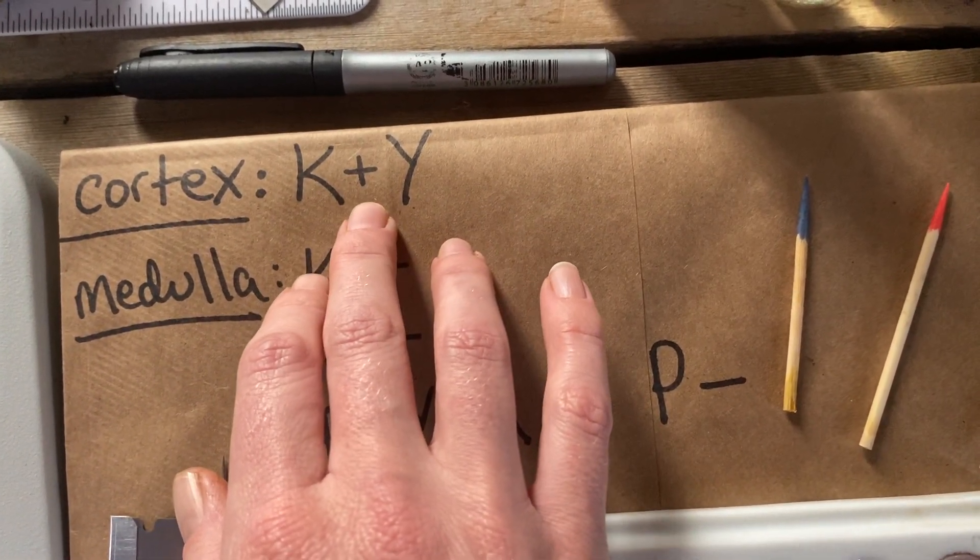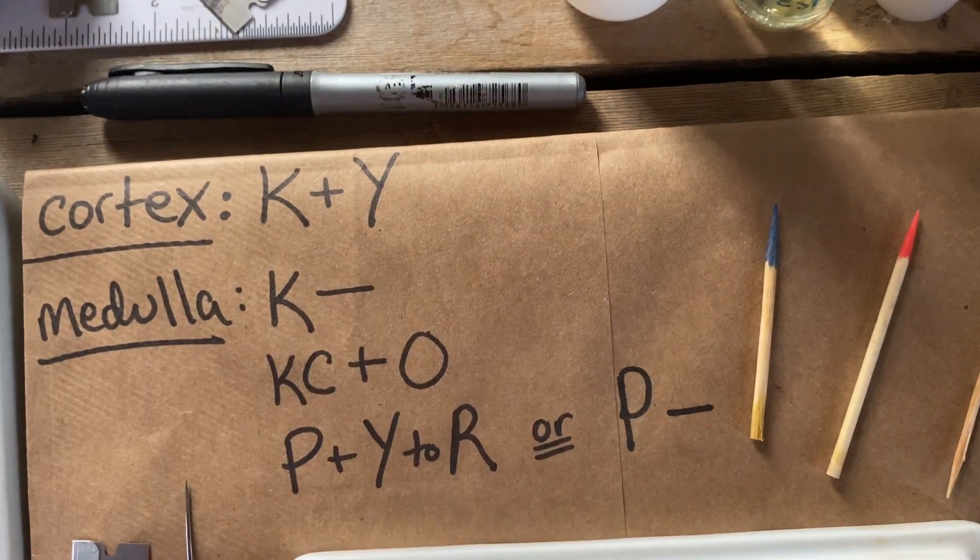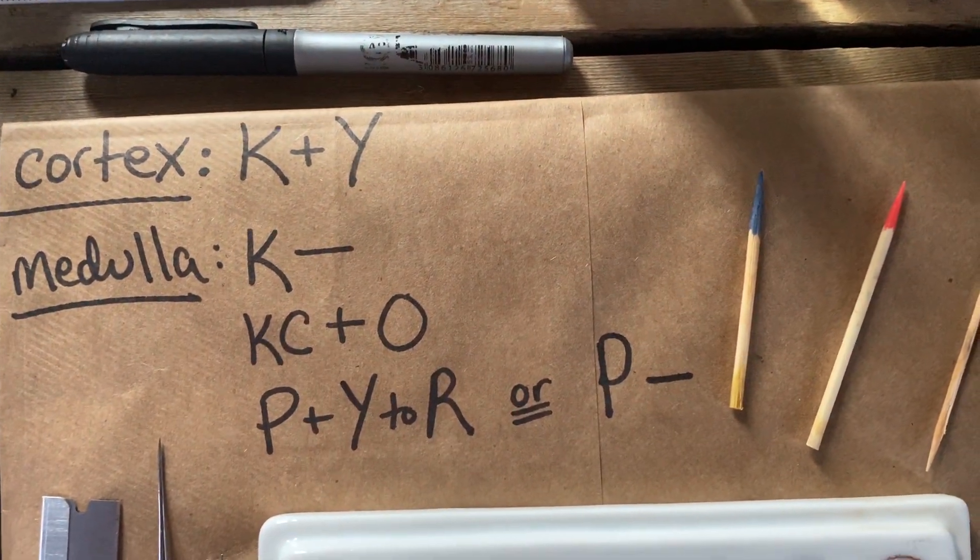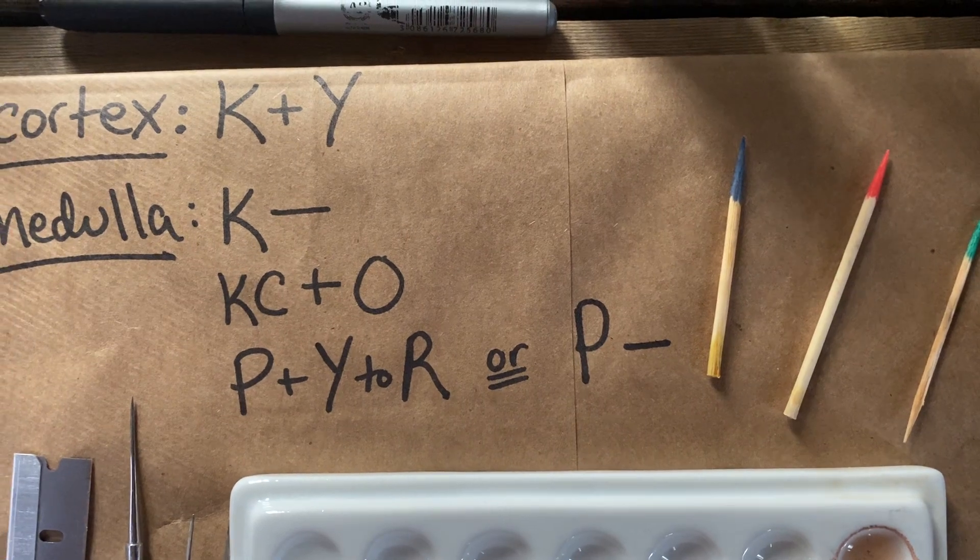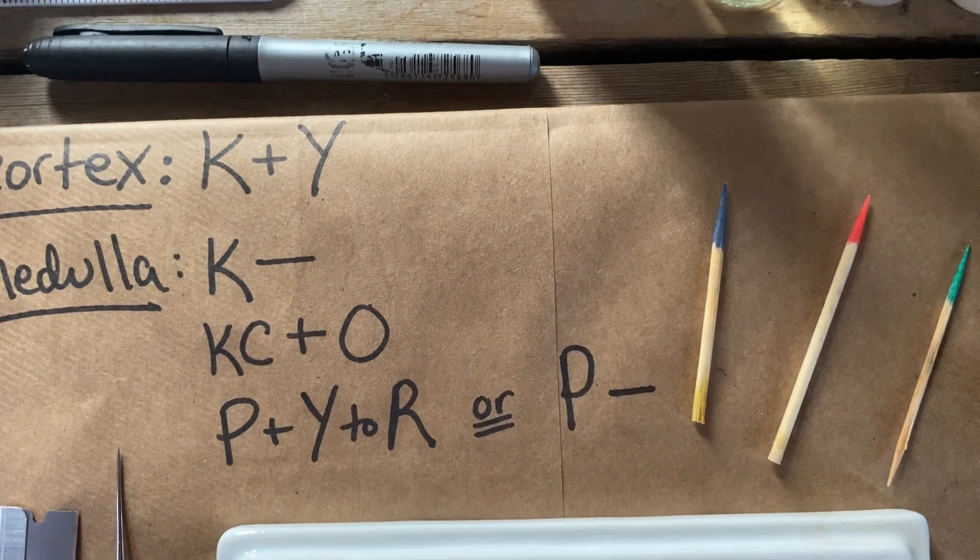When you do have a plus sign, that plus sign is going to be followed by another letter, either Y or O or R, sometimes even B, and those are the color changes that you're going to see. So Y for yellow, O for orange, R for red.